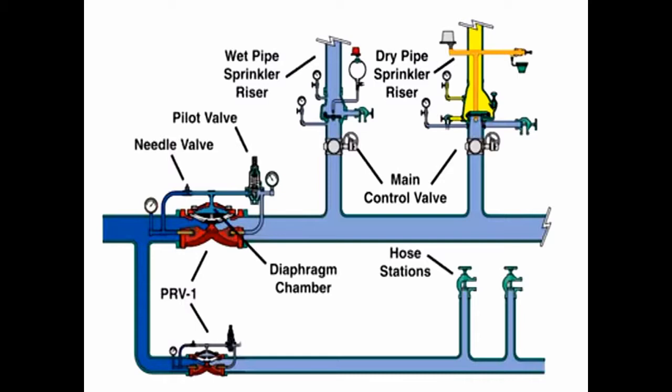Here we see the system ready for operation with no flow demand downstream of the PRV1. The system supply pipe contains water under 200 PSI of pressure, shown here in dark blue. The water downstream of the PRV1 is at the set pressure, shown here in light blue.